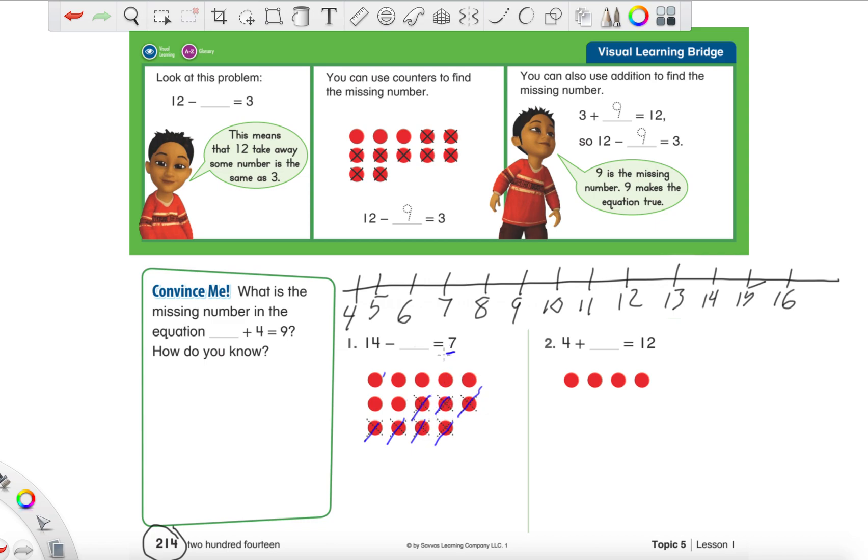So we can cross out these. 1, 2, 3, 4, 5, 6, 7. I crossed out 7 because that was the part right there. And I just count how many are left. 1, 2, 3, 4, 5, 6, and 7. So I have 7 dots left.